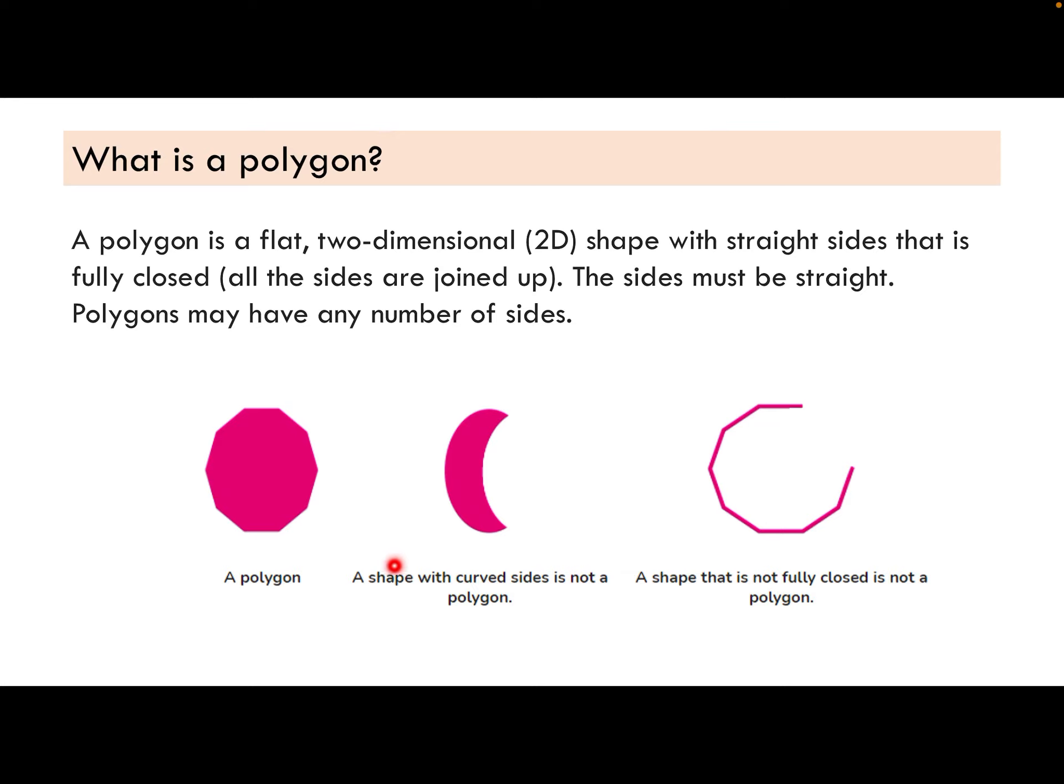but it does not have straight sides. And here it does have straight sides, but it is not a closed shape. Therefore it is not a polygon. So it's a closed shape with straight sides.